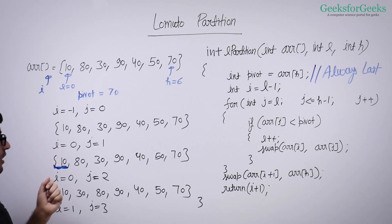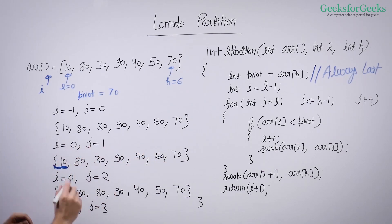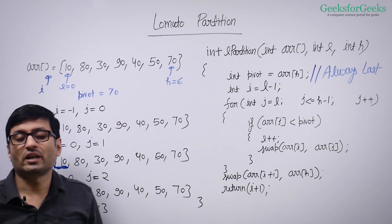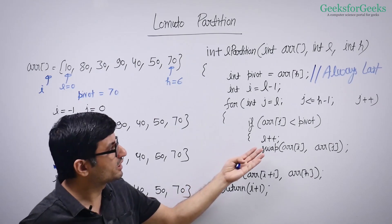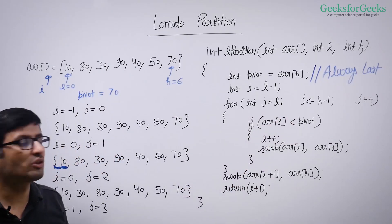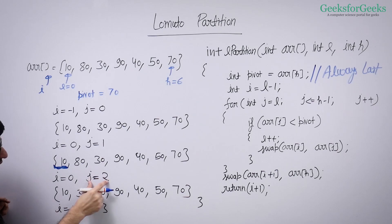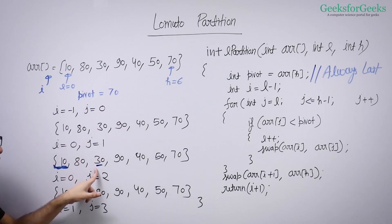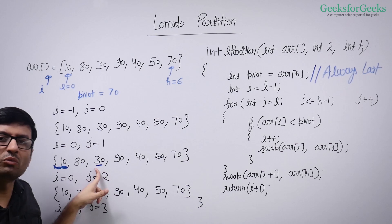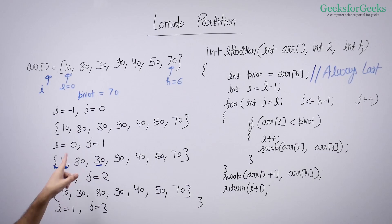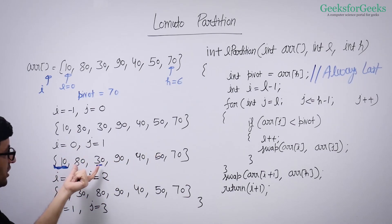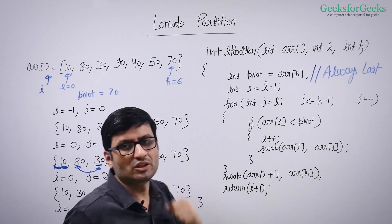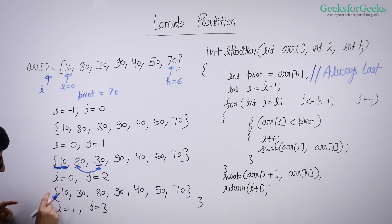The window of smaller elements now has one element, and j moves to the next position. When j reaches index 1, array[j] is 80 — greater than pivot 70 — so we do nothing and move on. When j reaches index 2, array[j] is 30, which is smaller than 70. So we increment i to one and swap 30 and 80. The window of smaller elements is now 10 and 30.